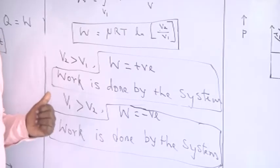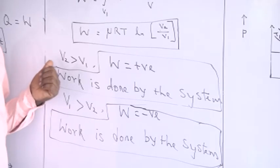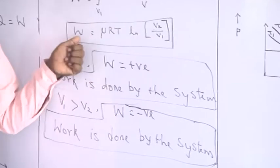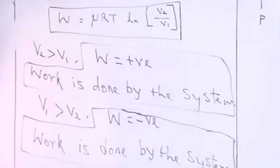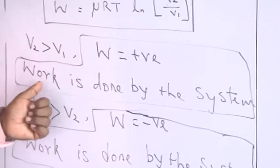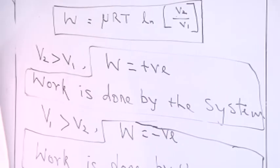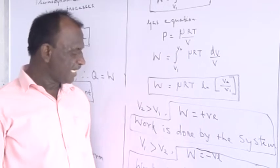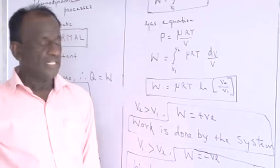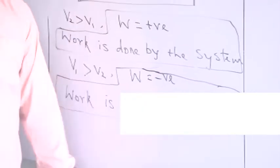Suppose the experiment is carried such that the final volume is greater than the initial volume. As per this equation, the amount of work done is positive, meaning work is done by the system. Conversely, if V1 is greater than V2, then the amount of work done is negative. These are the sign conventions used in thermodynamics.